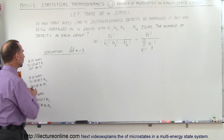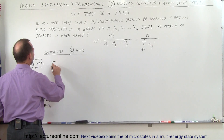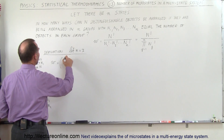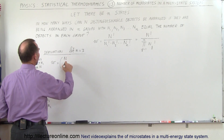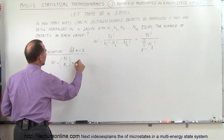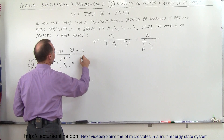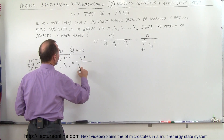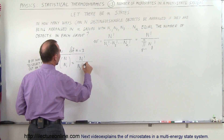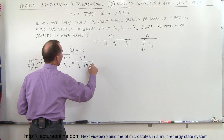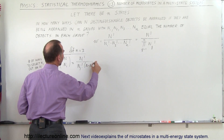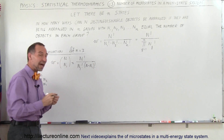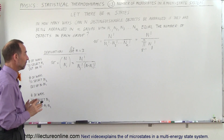So what does that look like? The number of microstates for selecting n sub 1 objects is going to be equal to n choose n sub 1, which equals n factorial divided by n sub 1 factorial times (n minus n sub 1) factorial. This is exactly the equation we would have if there were just a two-state system.